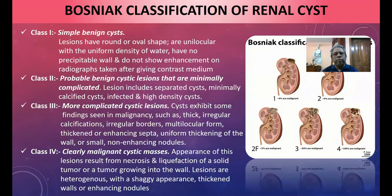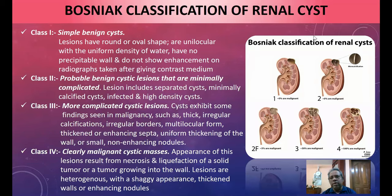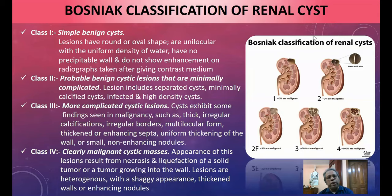Now let's describe the Bosniak classification of renal cysts. This classification is important because not all renal cysts are benign; some have malignant features. In Class I, simple benign cysts are round or oval, unilocular, with uniform water density. They have no perceptible wall and show no enhancement on CT scan after contrast medium.